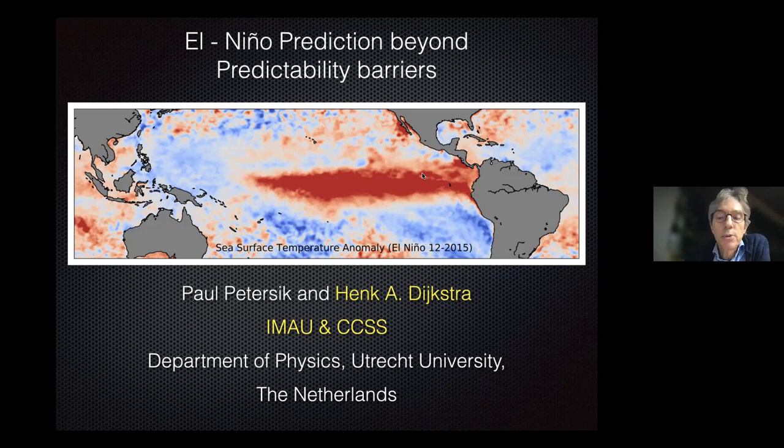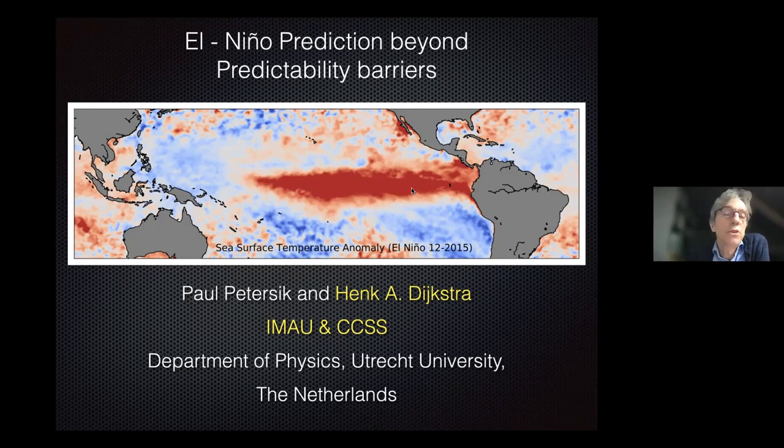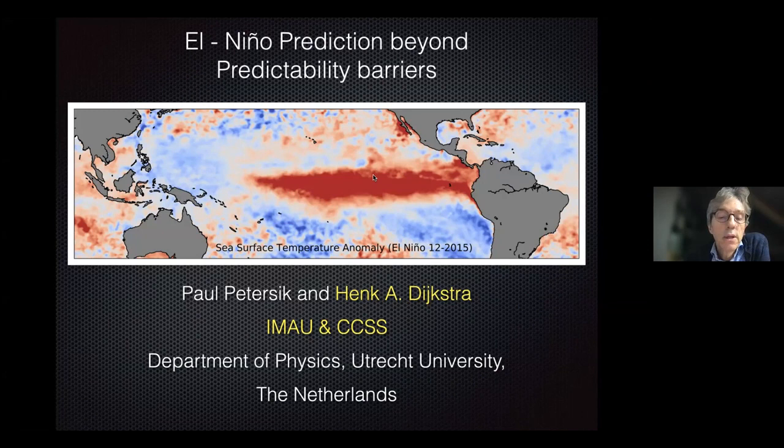Here you see the anomaly in December 2015, at about the maximum of the last really big El Niño. The temperature is up to four degrees warmer from Florida to Hawaii, even further than that. It has a lot of effects on climate worldwide — a lot of teleconnections with big weather anomalies, particularly around the Pacific Basin but even further on the globe.